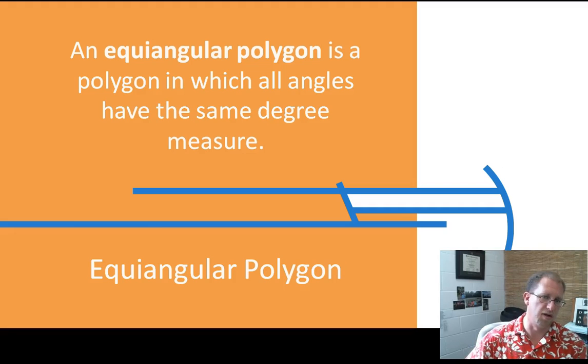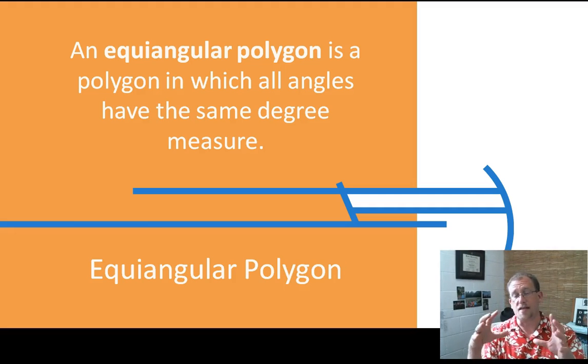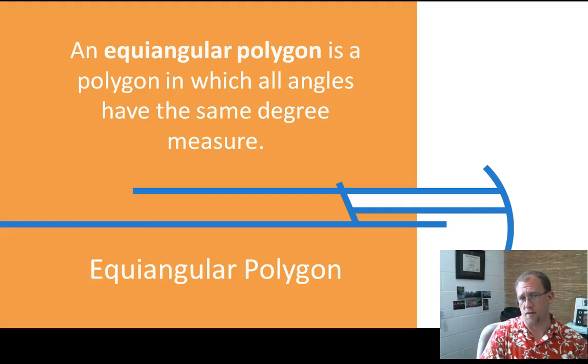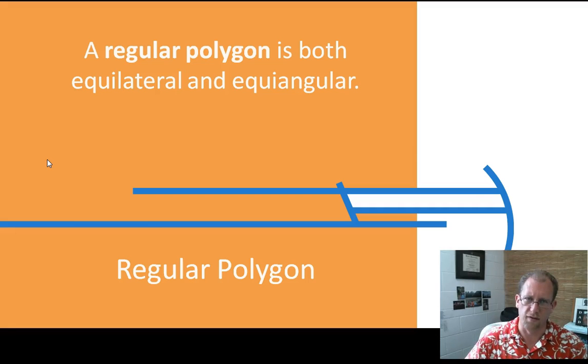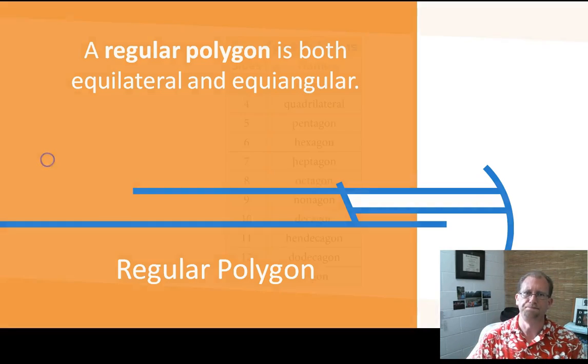An equangular polygon is a polygon in which all the angles have the same degree. Now, without exception, every equilateral triangle is also an equangular triangle. And without exception, every regular polygon that is equilateral must also be equangular. You can't have an equilateral that is not equangular. At least, I don't think you can. Maybe some smart people can disprove me, but that comes to mind. So regular means both equilateral and equangular, and we'll use that term a lot.